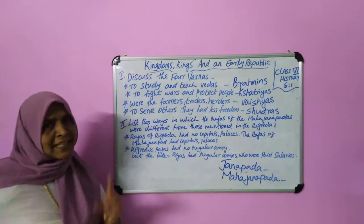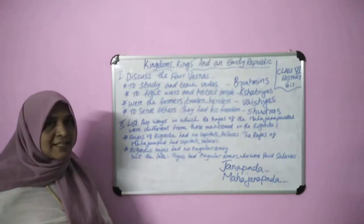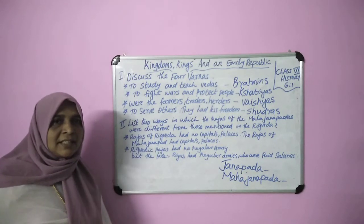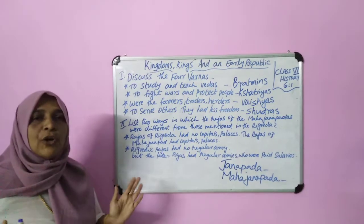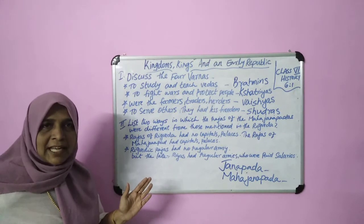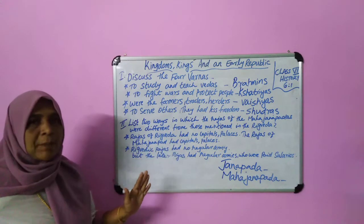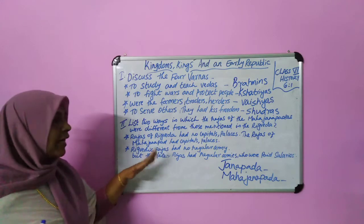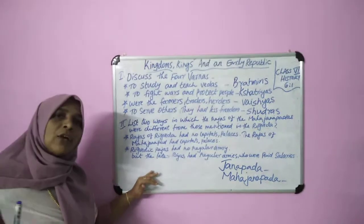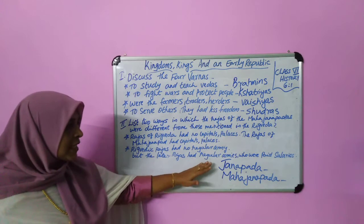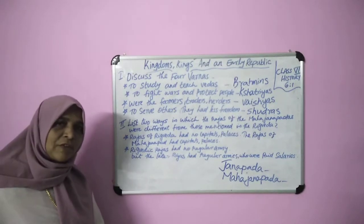Do you remember the Rig Vedic age and the Rig Vedic rajas? The rajas of the Rig Vedic age had no capitals or palaces. But the rajas of the mahajanapadas had capitals and palaces. Also, Rig Vedic rajas had no regular army, but the later rajas had regular armies whose soldiers were paid salaries. That's all for today. Thank you.